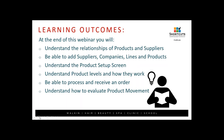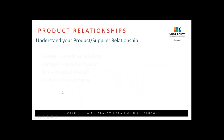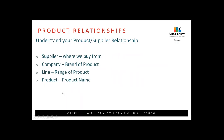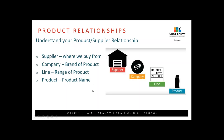First of all, understanding your product-supplier relationship. A lot of people get confused as to what a supplier is versus what a company is within Shortcuts. A supplier is where we buy from — the supplier sometimes isn't the same as the company. The company is the brand of the product, whereas the supplier is where we actually buy it from, such as a wholesaler or directly from the brand.